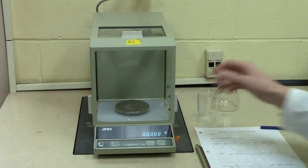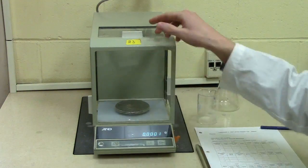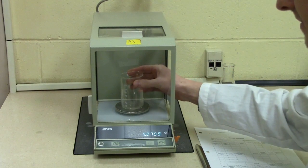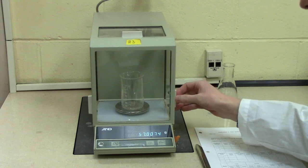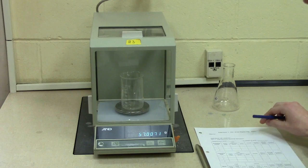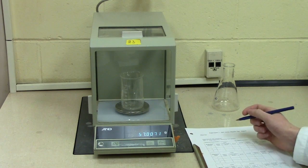Once you have your blank reading you can open up the doors either on the sides or the top of the balance and load in your empty beaker in this case. Closing the door you'll get a reading of what the mass of the beaker itself is. Make sure you record this as you'll be using it for weigh by difference.